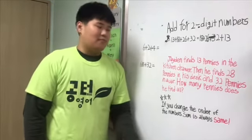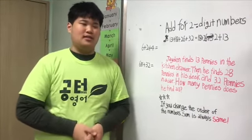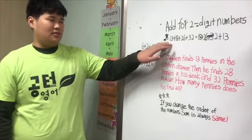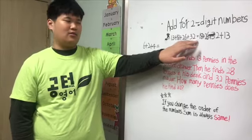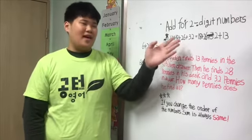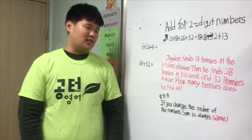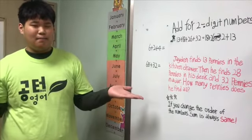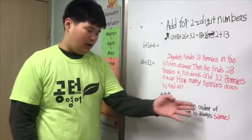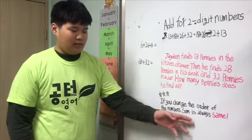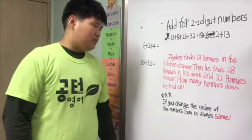And before we start the lesson, you should know about this. 13 plus 18 plus 26 plus 32 is equal to 18 plus 26 plus 32 plus 13. Why? Because if you change the order of the numbers, the sum is always the same.